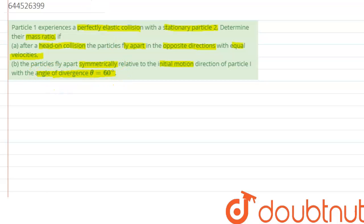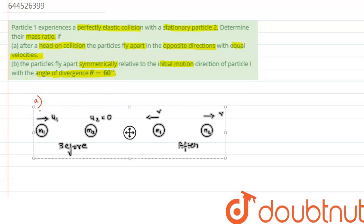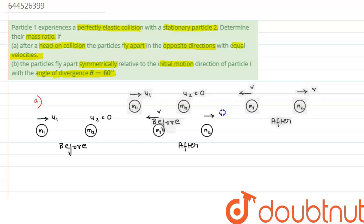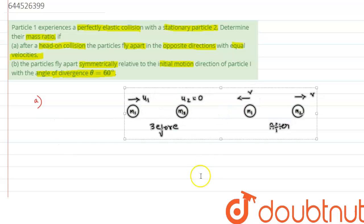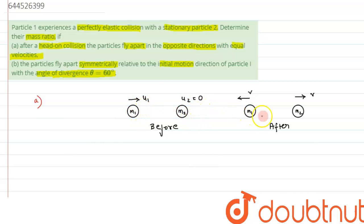Let's take the first part of the question and visualize this condition. We have depicted two conditions: before and after. Before: mass m1 is moving with velocity u1 and m2 is at rest. After collision, both are moving apart with equal velocities v, as we can see.